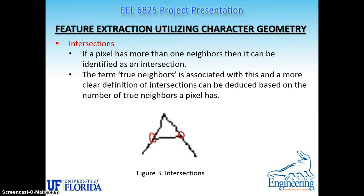Then we move on to intersections. If a pixel has more than one neighbor then it can be identified as an intersection. The term 'two neighbors' is associated with this, and a more clear definition of intersections can be deduced based on the number of two neighbors a pixel has. As shown in the figure, in the middle of the reverse V shape, a horizontal line is intersecting. These two points have two neighbors and will be denoted as intersections and stored in the list.